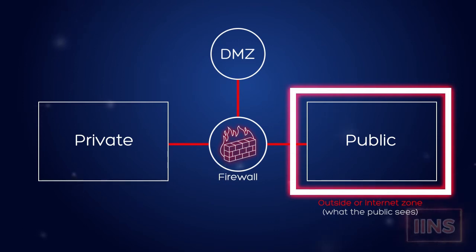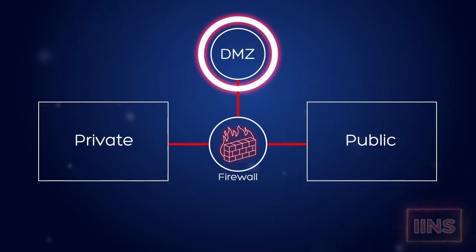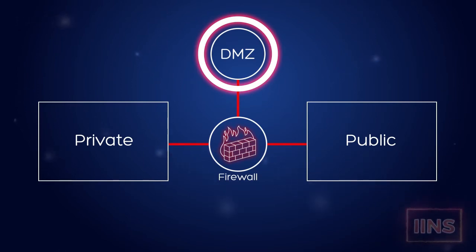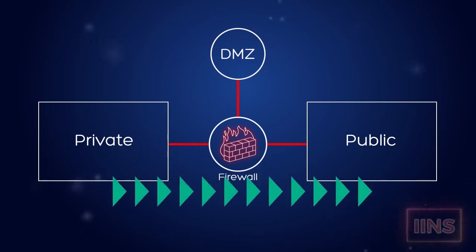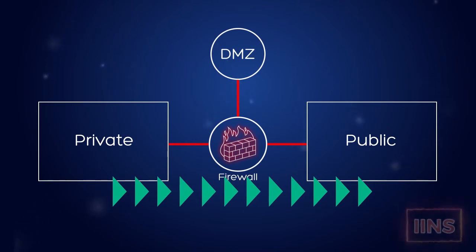In between that, you have what's called a DMZ, a demilitarized zone. This is a zone which holds servers that need both public and private access. As far as the way your data flows, there's usually not a lot of restriction for data going from the private to the public zone, especially since we're mostly talking about requests here, like web requests.